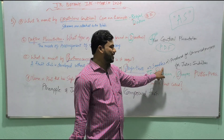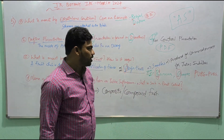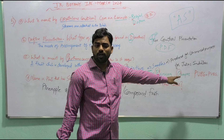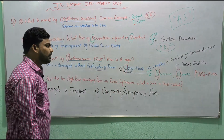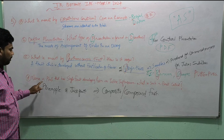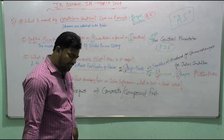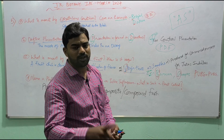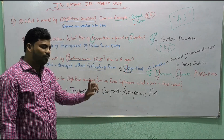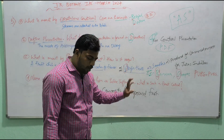These fruits are seedless and are produced for commercial purposes of juice industries. Examples: banana and grapes. Mnemonic: PUBG — replace U with V. Question 4: Name a plant with a single fruit developing from an entire inflorescence — pineapple and jackfruit. Such a fruit is called a composite or compound fruit.